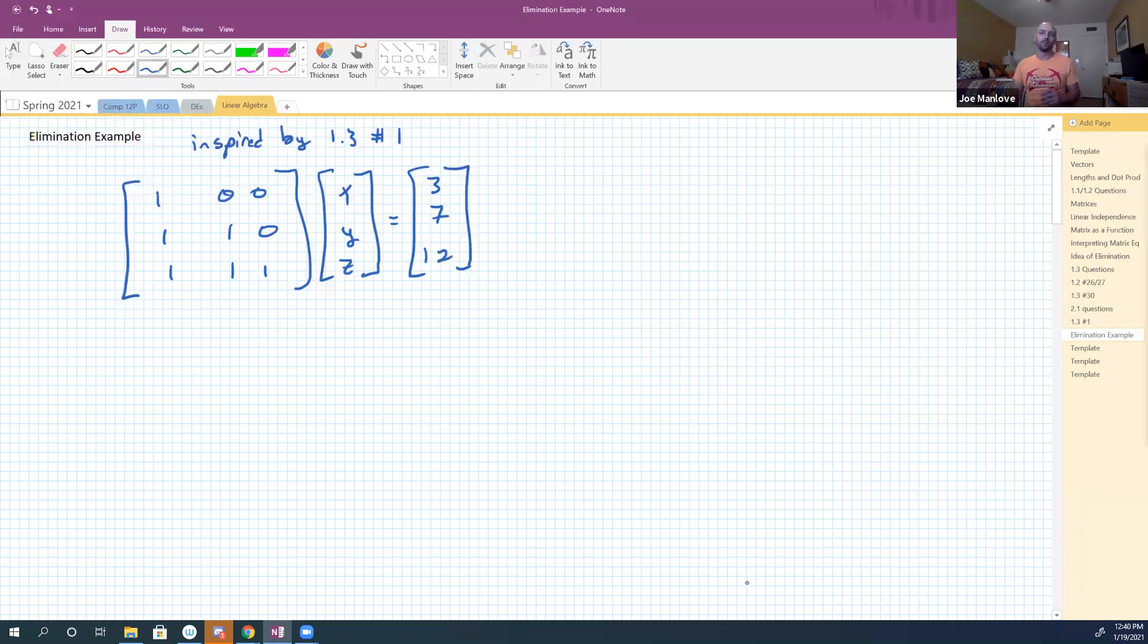All right, so let's talk about running elimination. This is inspired by problem 1.3 number one, in case you're wondering why this seems familiar. The elimination approach that the book takes is firstly motivated by systems of equations. So I have some matrix multiplication system here, or matrix multiplication equation. This is an equation of the form Ax equals b. You guys all on board with that as an interpretation of what this means?